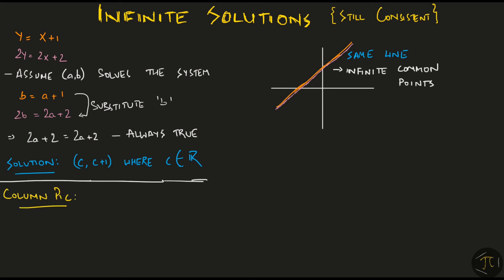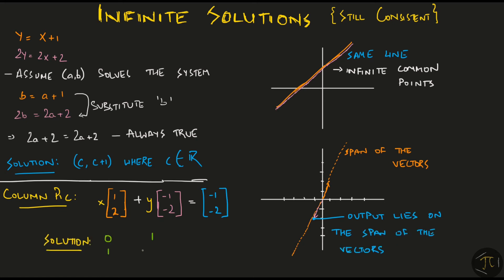Now let's take a look at the column picture. We first convert the system into a linear combination of two vectors. After plotting the vectors on a graph, we observe that this time again, the span of the vectors is a line. But now the output lies on the span of the input vectors.